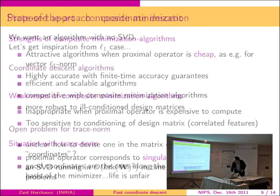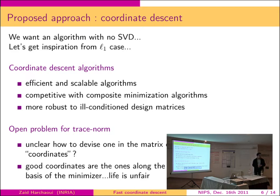We're seeking a method that doesn't involve such highly expensive iterations. What we propose is a coordinate descent approach. In the vector case for just the regular L1 norm, coordinate descent algorithms provide efficient and scalable algorithms for large-scale problems. They're competitive with composite minimization algorithms, although they don't come with similar theoretical guarantees, and they're quite robust to ill-conditioned design matrices. The issue is how to devise such methods for trace norm regularization penalties, because we don't know which kind of coordinates we're going to choose to perform coordinate descent.